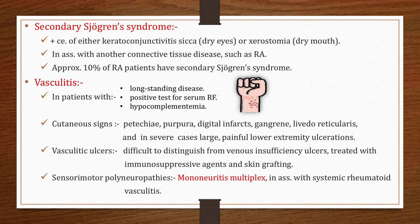Secondary Sjögren's syndrome is diagnosed when a patient has keratoconjunctivitis sicca (dry eyes) and xerostomia (dry mouth) in association with another connective tissue disease such as rheumatoid arthritis. Approximately 10% of RA patients develop secondary Sjögren's syndrome.